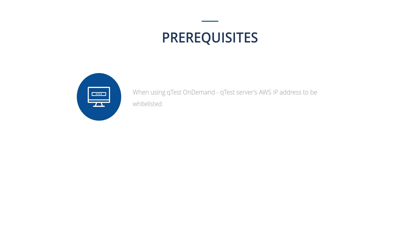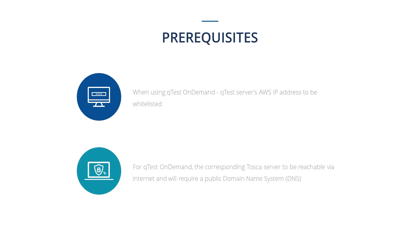This will help the Tosca server communicate with QTES. Second, for integrations where QTES is hosted on Tricentus Cloud, i.e. QTES on demand, the corresponding Tosca server must be reachable via the internet. Please note that the server requires a public domain name system or DNS. To learn more about the prerequisites, check out the QTES and Tosca integration quick start guide manual from the link provided in the video description.